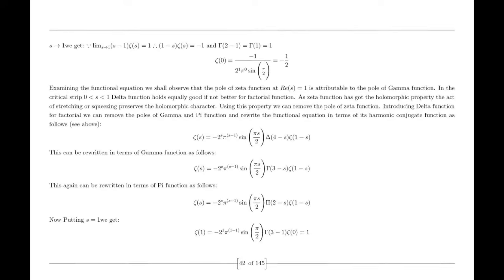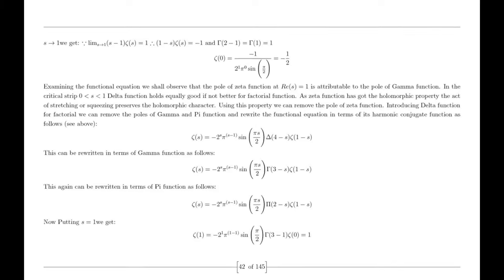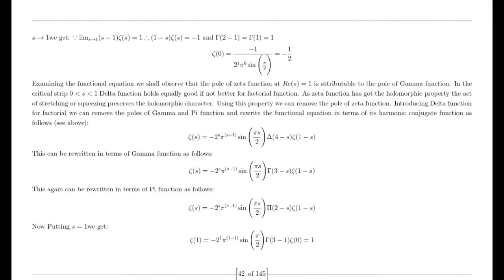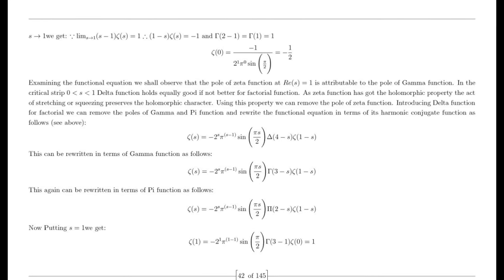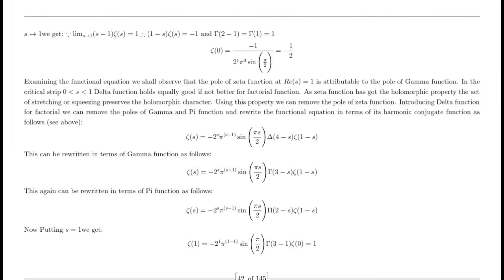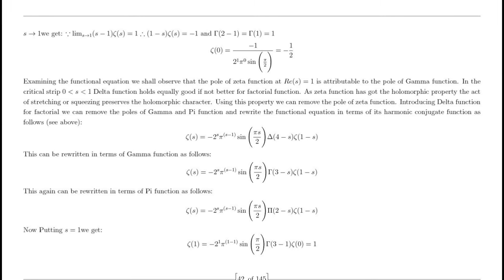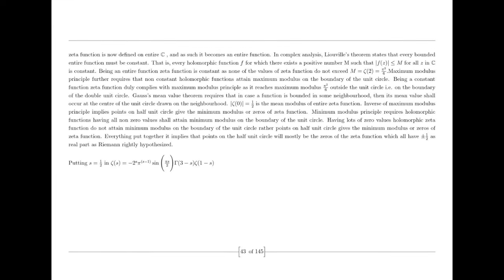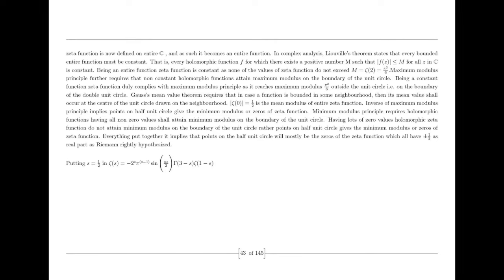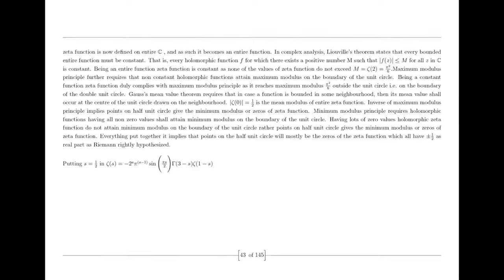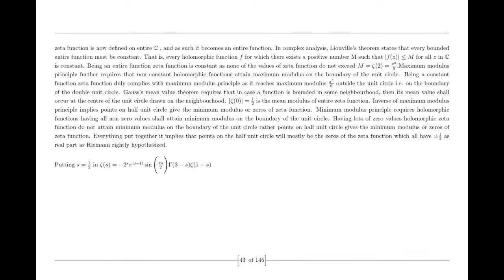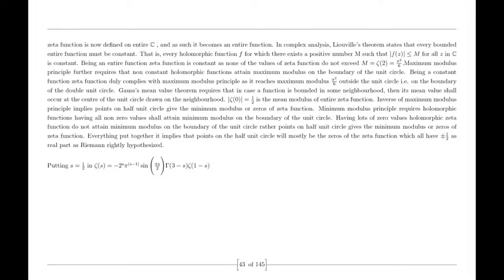Quantum computers rely on the principles of quantum mechanics and utilize quantum bits or qubits to perform computations. The mathematics associated with quantum computing involves complex linear algebra and quantum algorithms. Complex numbers are integral to representing quantum states, quantum gates, and quantum operations. If imaginary numbers were brought down to the real number line, it would impact the mathematical foundations of quantum computing. The use of complex numbers would remain essential for representing and manipulating quantum states, as well as performing quantum operations and simulations. Extending the real number line might lead to the development of new mathematical techniques and algorithms for quantum computations, enhancing the efficiency and capabilities of quantum computers.